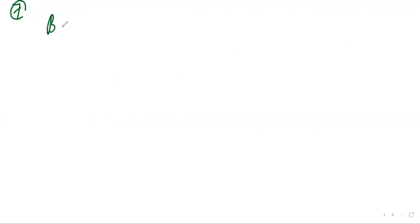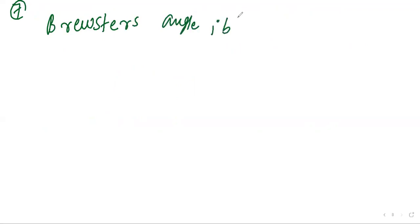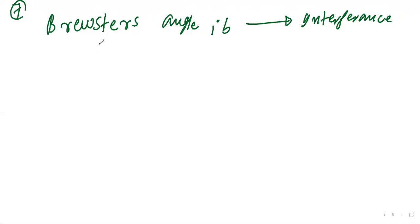Question seven: what is the Brewster angle IB for an interface? The relation is mu = tan(IB). Since mu lies between 1 and infinity, we substitute to find the range of IB.